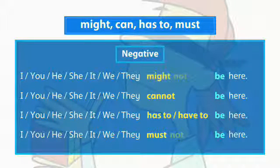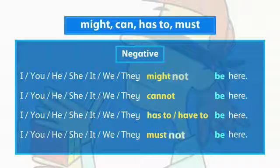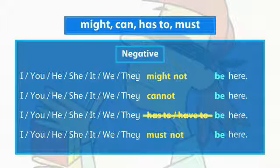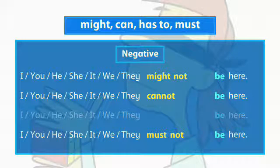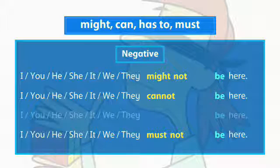We form the negative with 'not'. We do not use 'has to' and 'have to' in the negative to express certainty. We usually contract the negative form of 'can'.